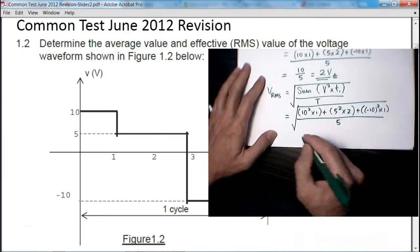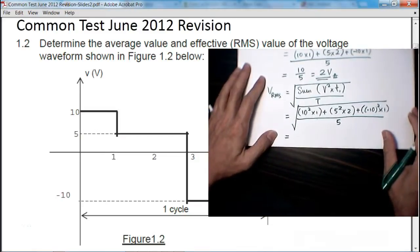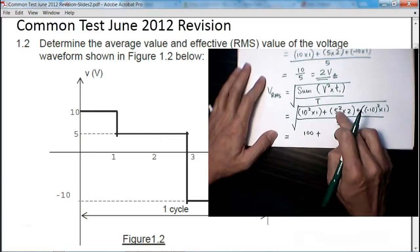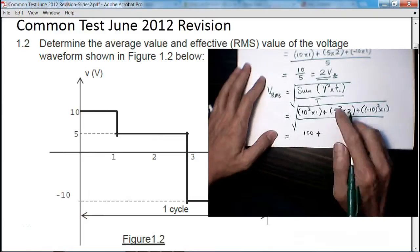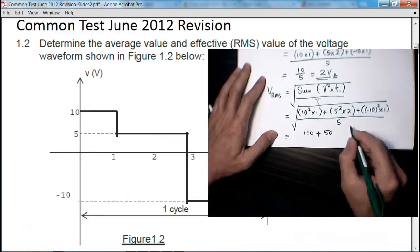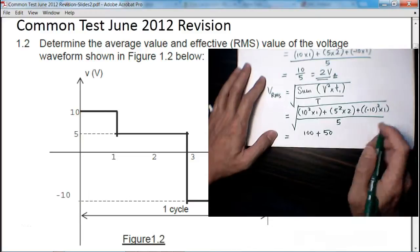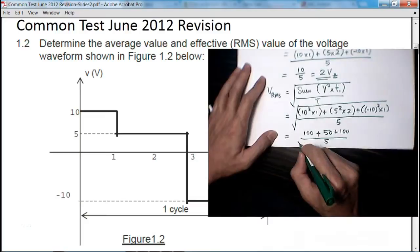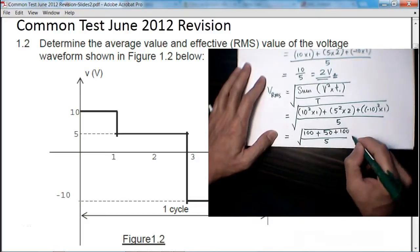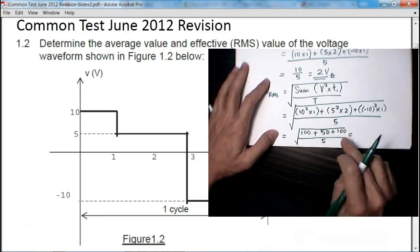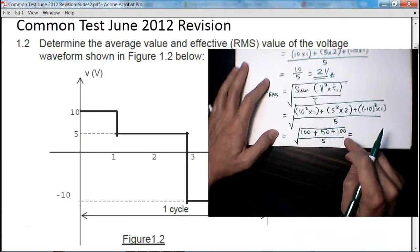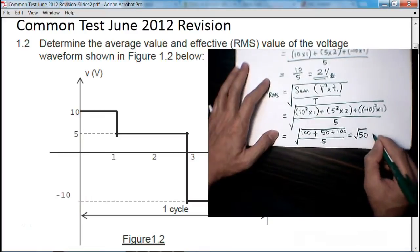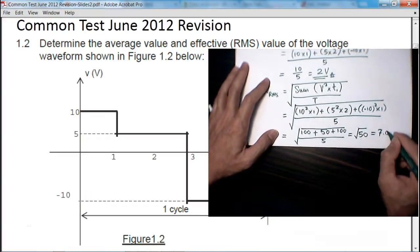That gives me 10 by 10 is 100, plus 5 squared is 25 times 2 is 50, minus 10 times minus 10 is 100. So that gives me 250 divided by 5, which is 50, and the square root of 50 is about 7.07 volts.